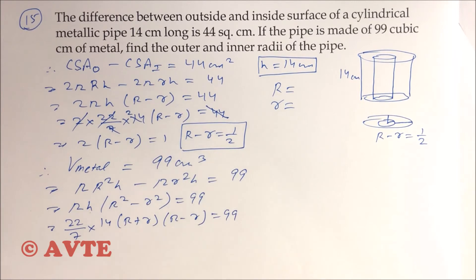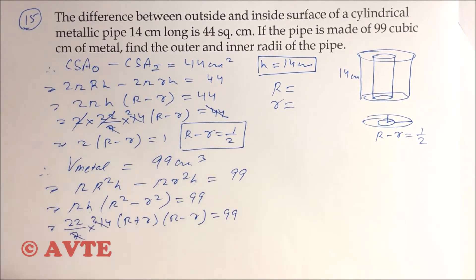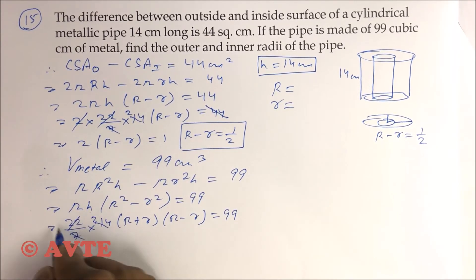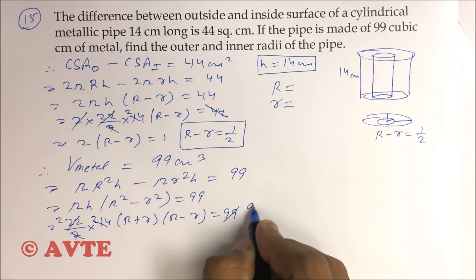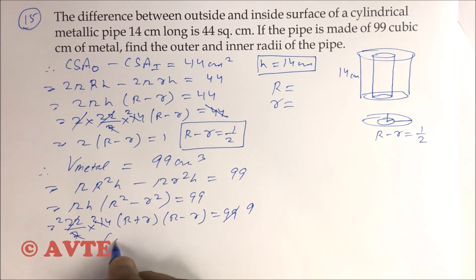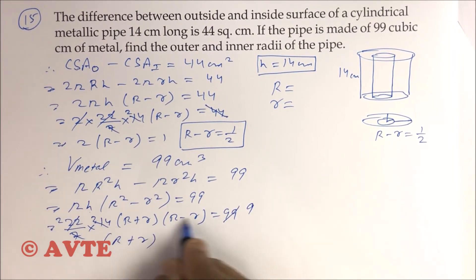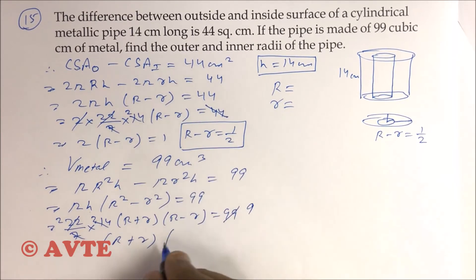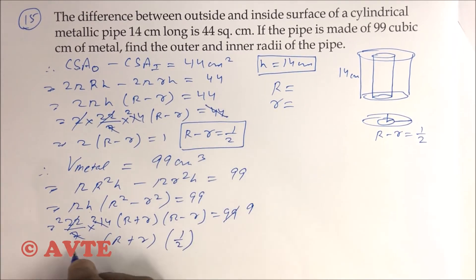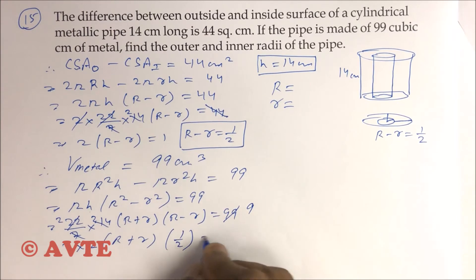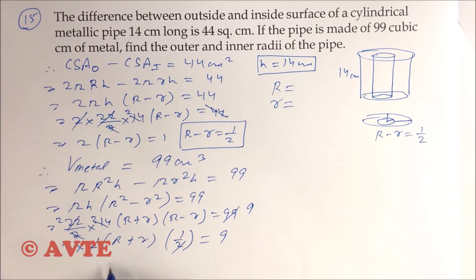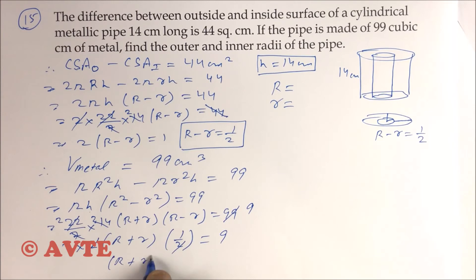This is your 2, this is 11, 2s are canceled, 9s remain. That means (R + r) and R - r where R - r is 1/2, this is 2 × 2 equals 9. This 2 will be cancelled, so R + r = 9/2.